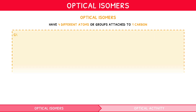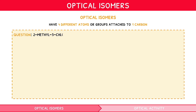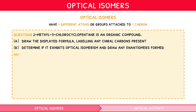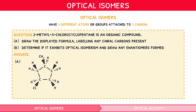Let's review this concept with an example question. 2-methyl-5-chlorocyclopentane is an organic compound. a) Draw the displayed formula, labelling any chiral carbons present, and b) determine if it exhibits optical isomerism and draw any enantiomers formed. First, we draw the structure of 2-methyl-5-chlorocyclopentane: a pentane ring with a methyl group on the second carbon and a chlorine group on the fifth carbon. It does not matter which carbon you number as 1, but the leftmost carbon is typically used, counting clockwise from there. Ignoring all carbons with two of the same atom attached, we are left with carbons 2 and 5.